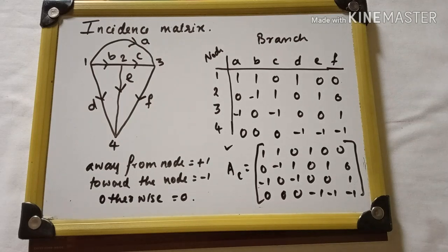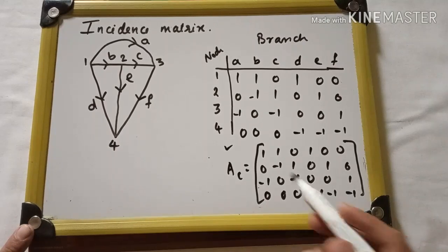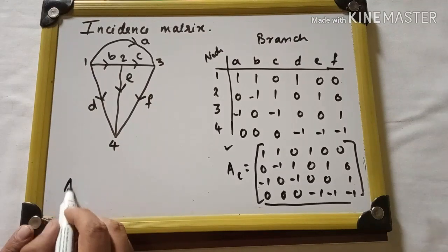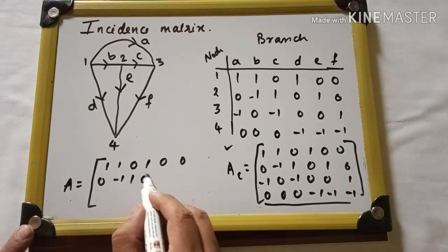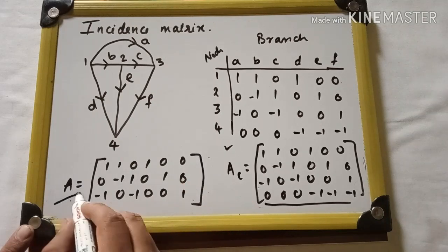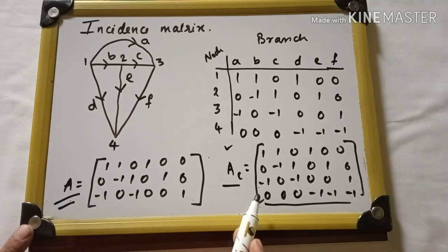Now, what will be the reduced incidence matrix? In the reduced incidence matrix, we delete any one row from the complete incidence matrix. We are deleting the last row. The reduced incidence matrix A is the remaining rows. By removing any one row from the complete incidence matrix, we get the reduced incidence matrix. This is how we find the incidence matrix.